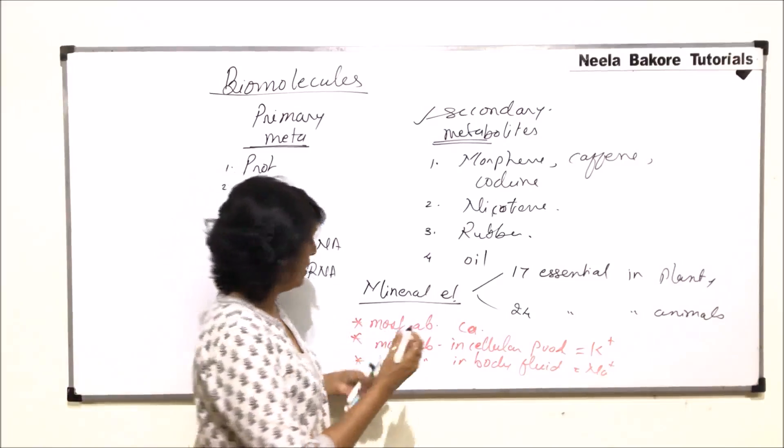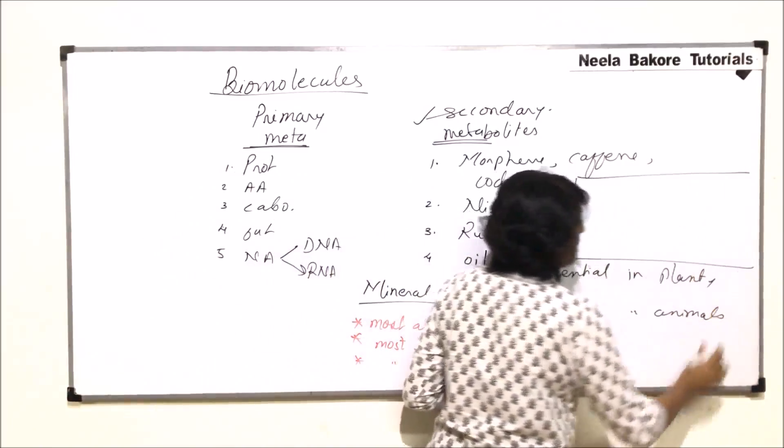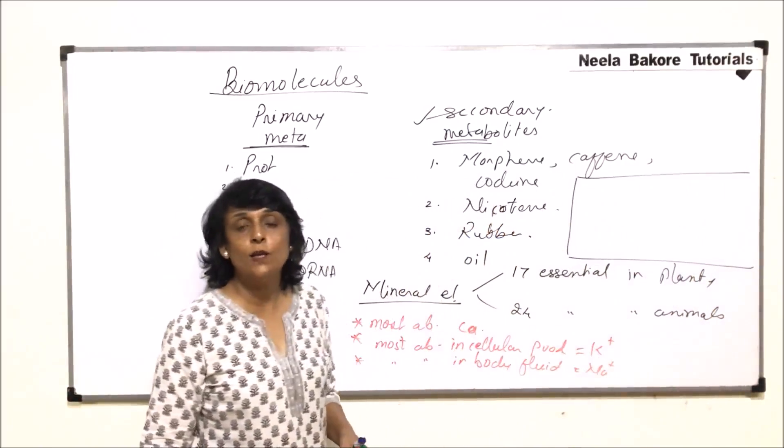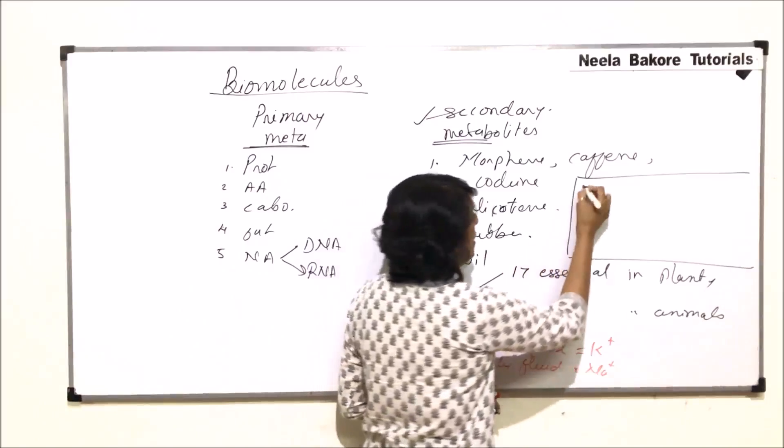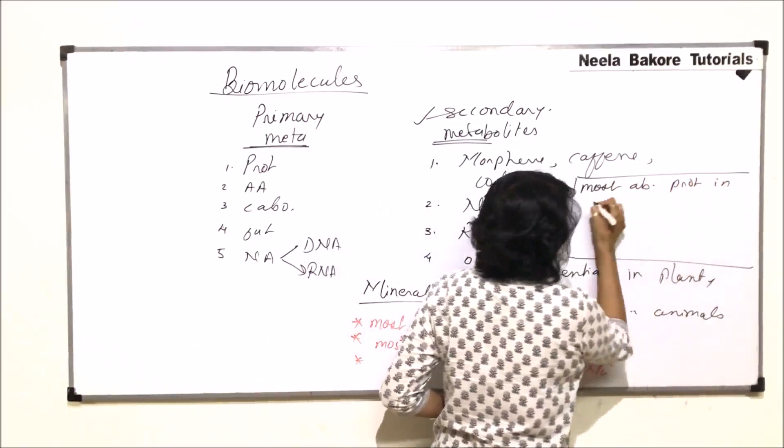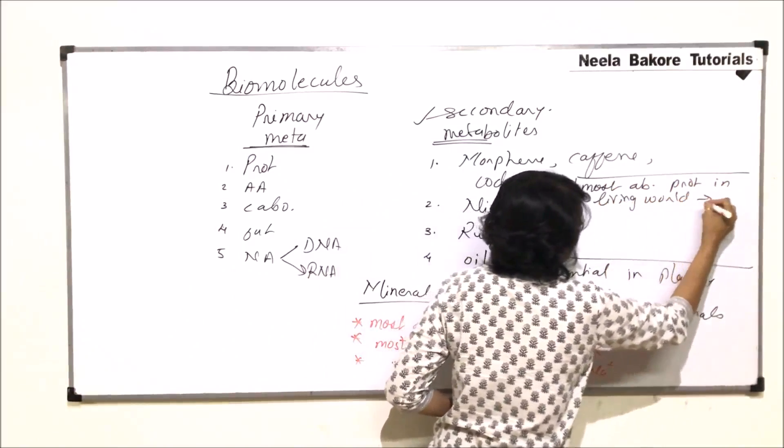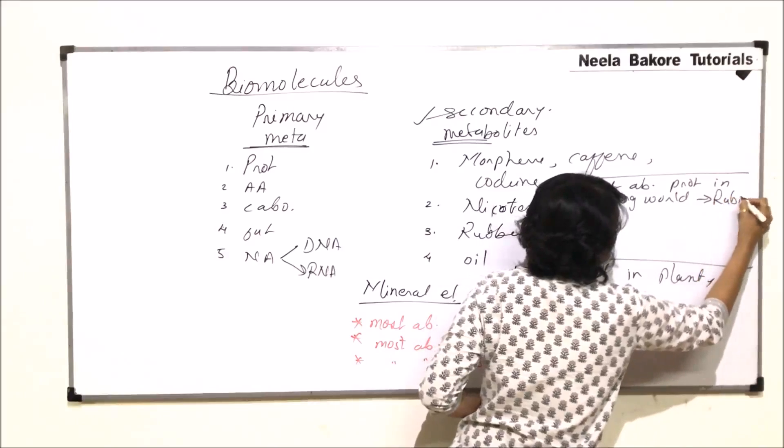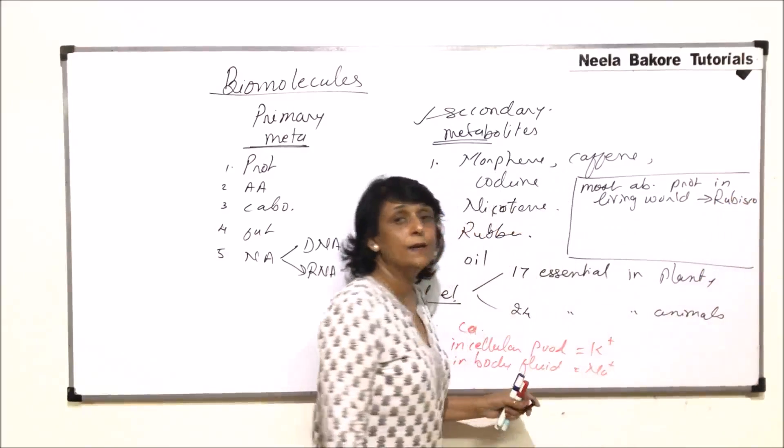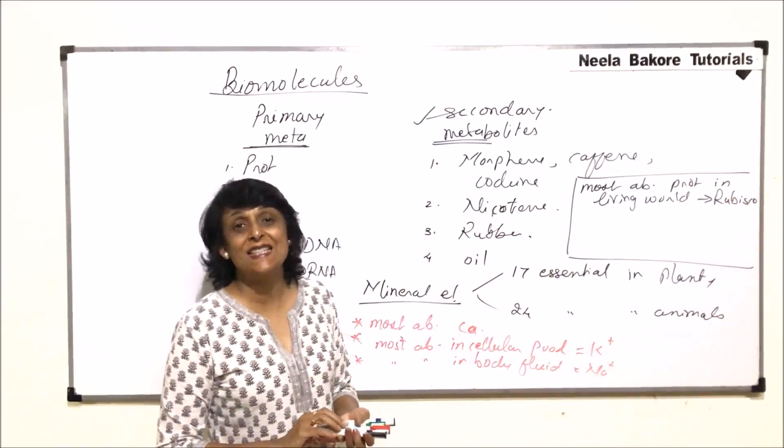One more thing that we can write here. The most abundant protein in the organic world, that is in the living world, is Rubisco. That is ribulose bisphosphate carboxylase oxygenase enzyme. The enzyme which plays a very important role in photosynthesis.